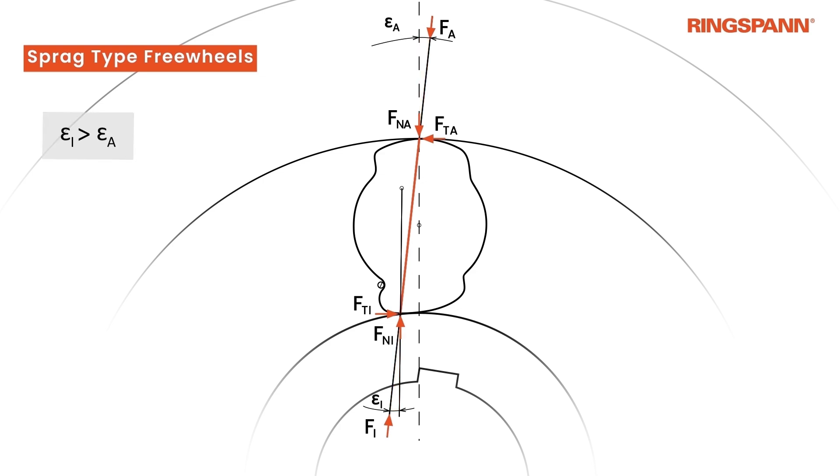The inner clamping angle Epsilon I is larger than the outer clamping angle Epsilon A. To achieve a self-locking effect, the tangent of Epsilon I must be larger than the friction coefficient Mu.